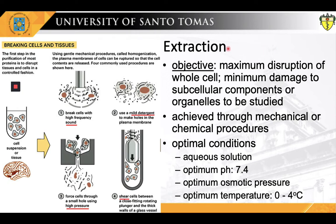The first phase involves extraction, also known as cell disruption. The objective of this phase is the maximum disruption of the whole cell but minimum damage to subcellular compartments, particularly the organelles to be studied. This is achieved via various mechanical or chemical procedures, usually done in optimal and physiologic conditions to prevent the loss of biologic activities of the cell. This is carried out by the employment of aqueous and physiologic solutions and avoidance of extremes of pH, osmotic pressure, and especially of high temperature.